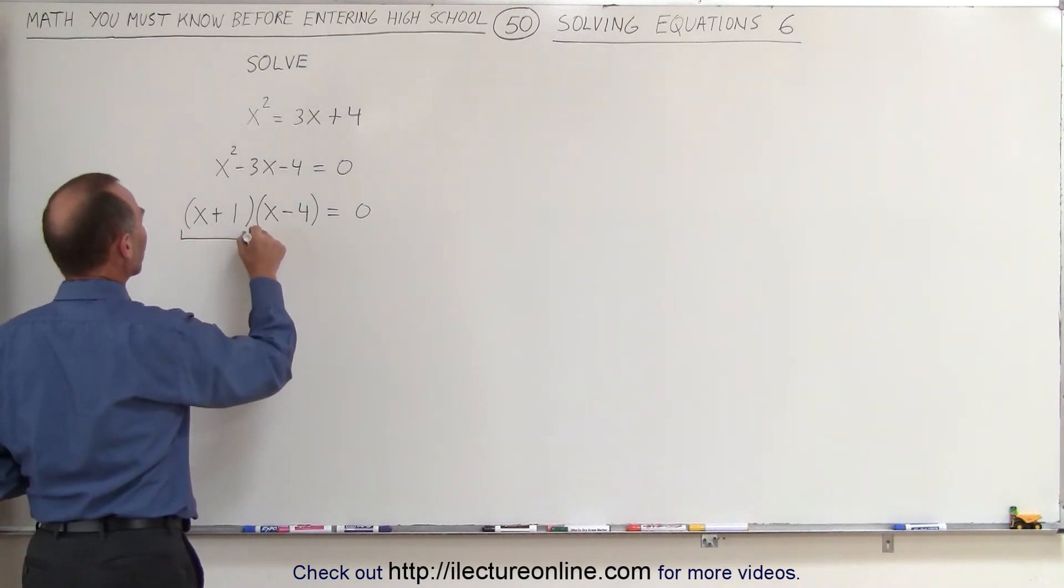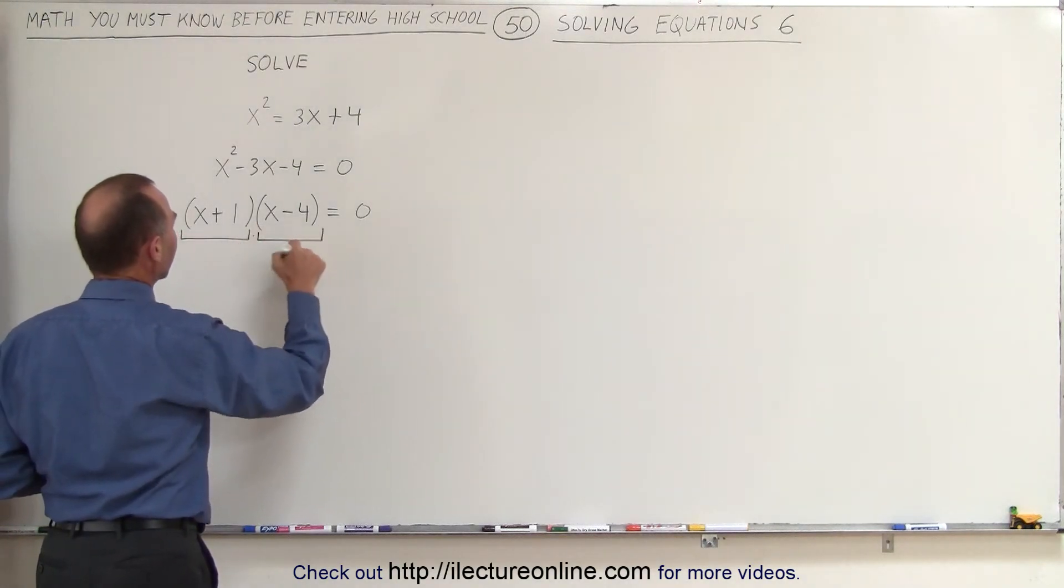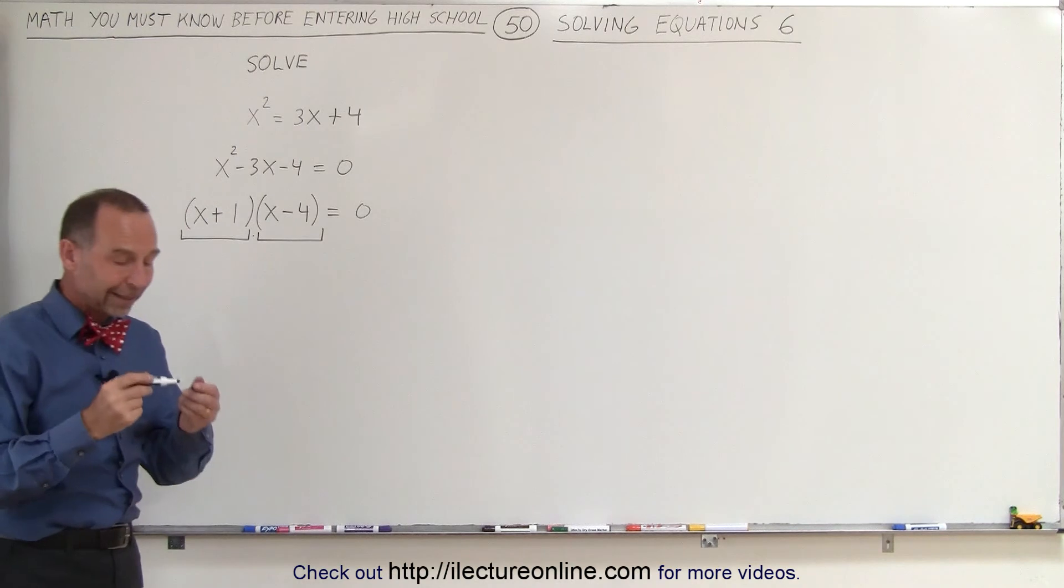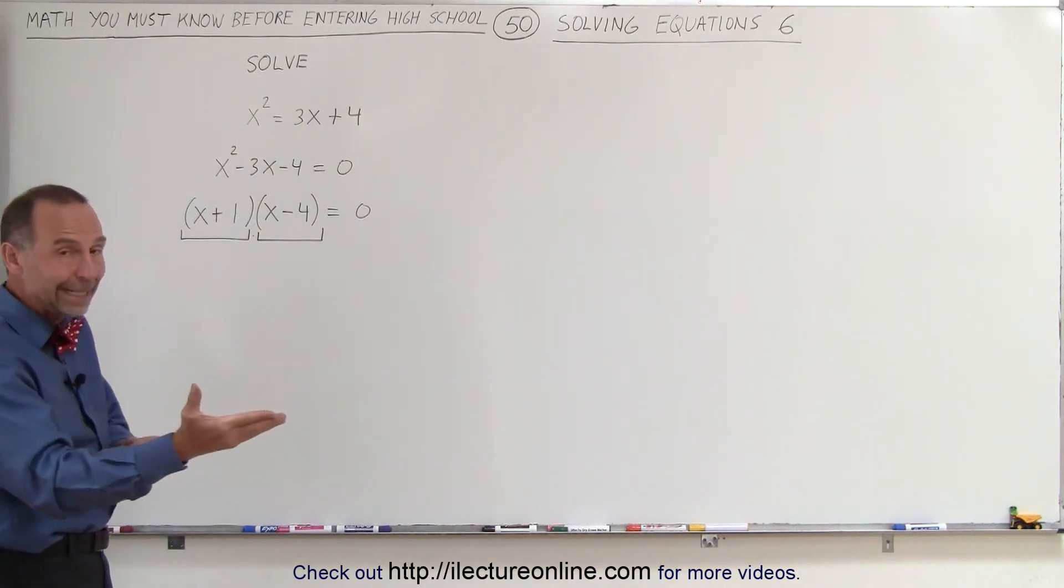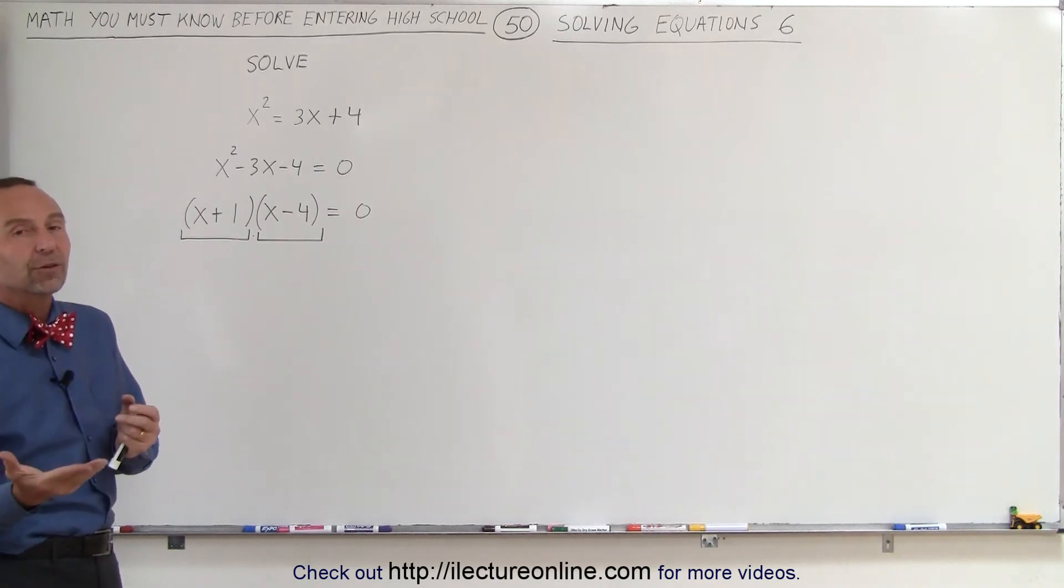Again, we have the product of two binomials. The first binomial multiplied times the second binomial, and then gives us a zero, which means when you multiply two things together and you get a zero, either one is zero or the other must be zero.